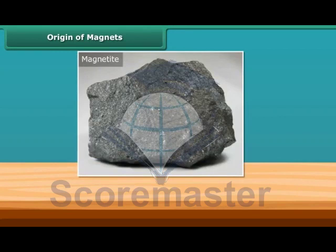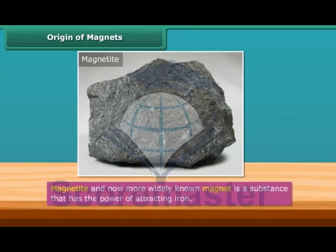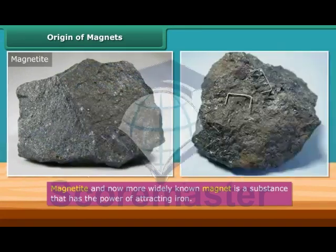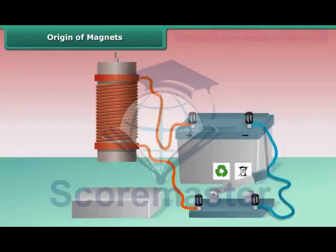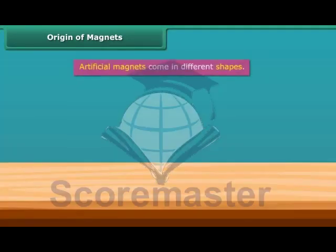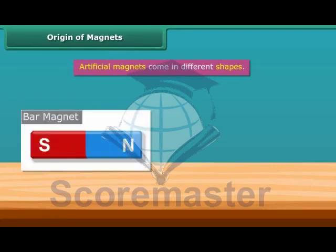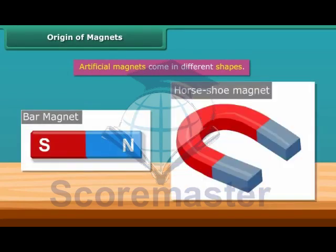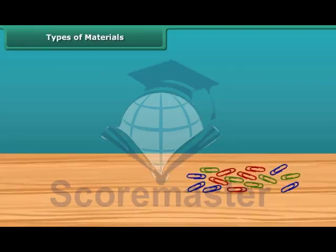Origin of magnets: magnetite is a natural magnet and contains iron. In later days, this was more widely known as a magnet. A magnet is a substance that has the power of attracting iron. Magnets can also be made artificially; however, the process of making artificial magnets is a recent discovery. Artificial magnets come in different shapes, for example, bar magnets or shoe magnets.